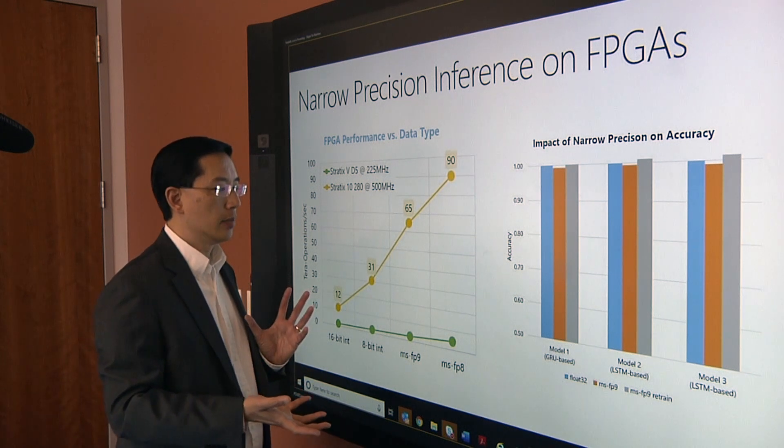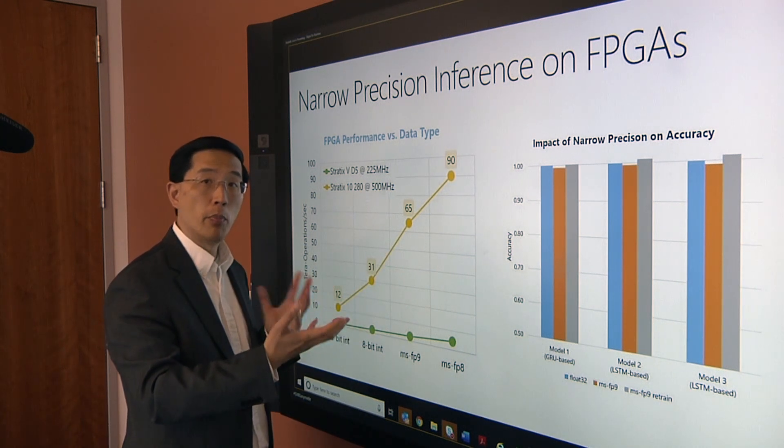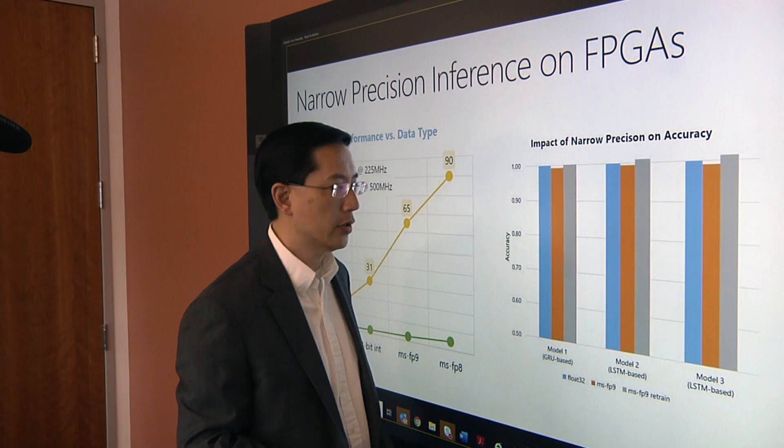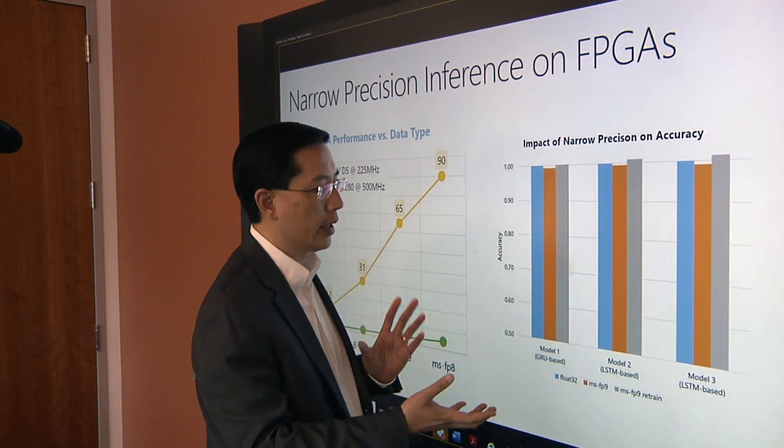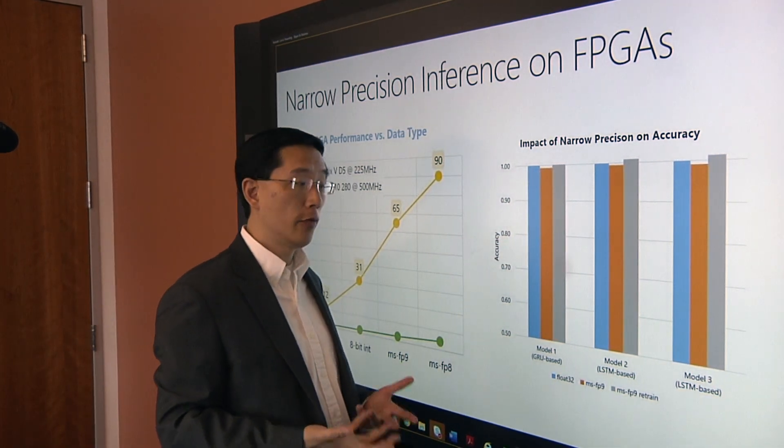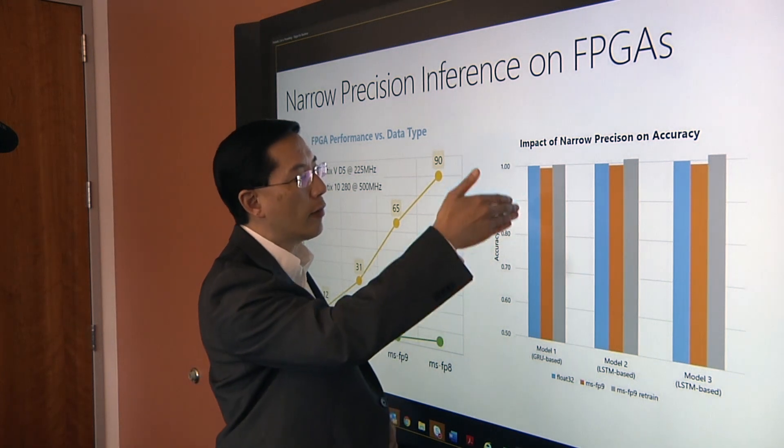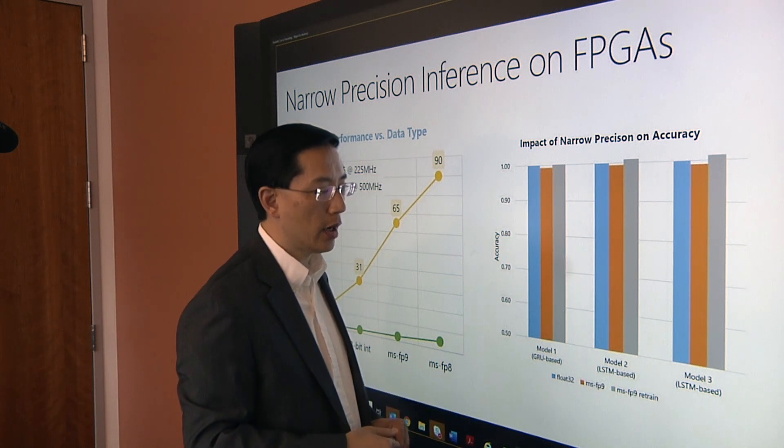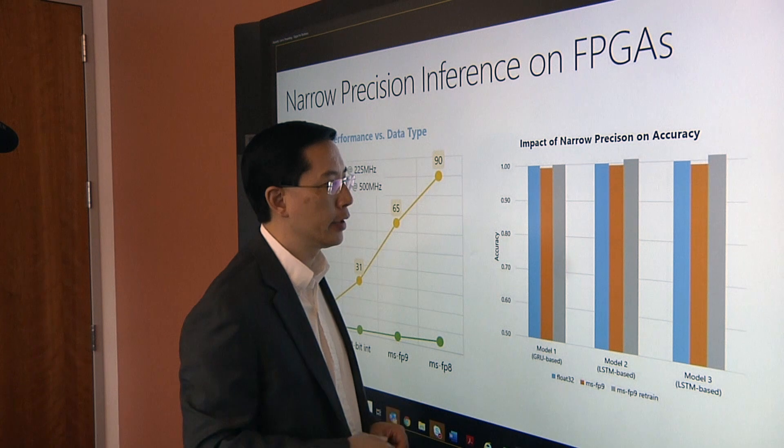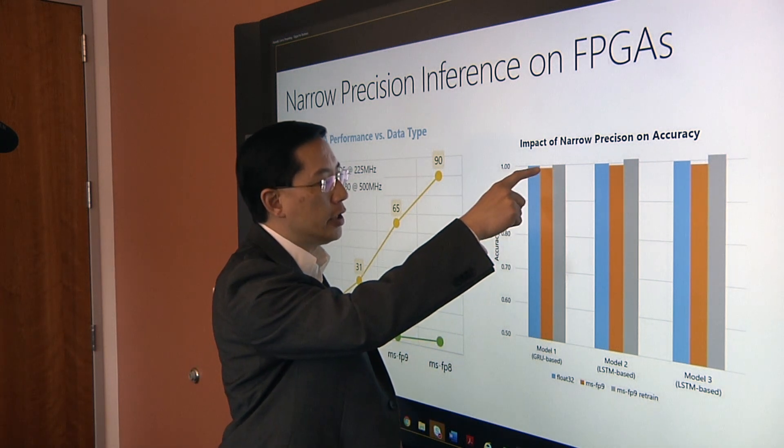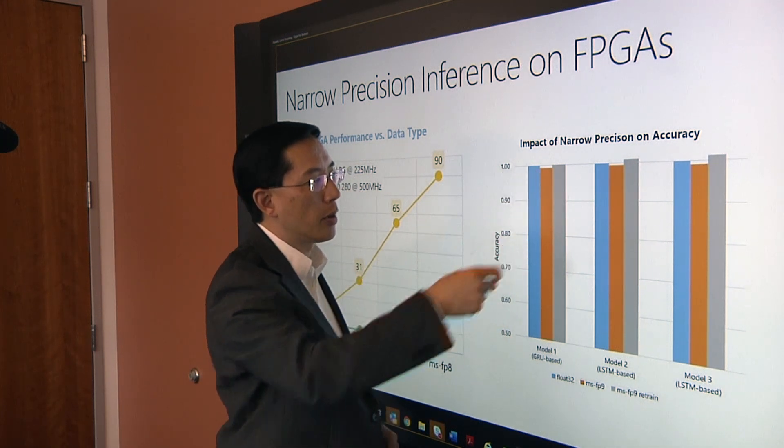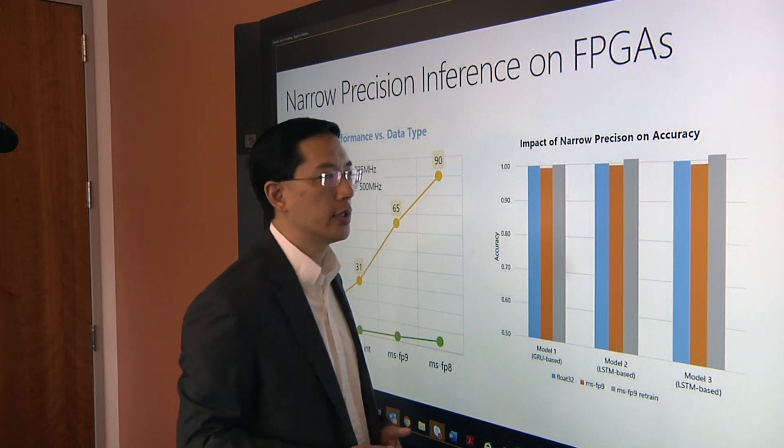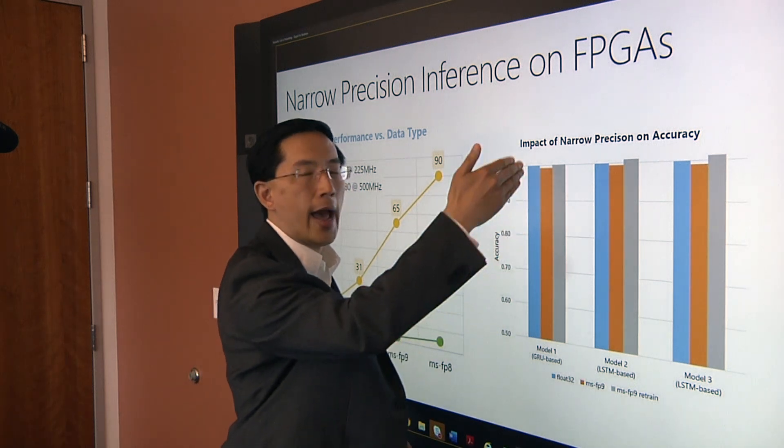And so then the question becomes, okay, well, since I'm able to use my memory bandwidth better now and pack more numbers into it, maybe I'm losing something in terms of accuracy. And this was the results of their research. What they showed was that in blue here, when they trained with full 32-bit floating point numbers, they got a reference level of accuracy of 1.0. When they dropped all the way down to their FP9 format, 9 bits in the numbers, their accuracy dropped just a little bit. And you can see that the orange bars here are just a little bit lower than the blue.